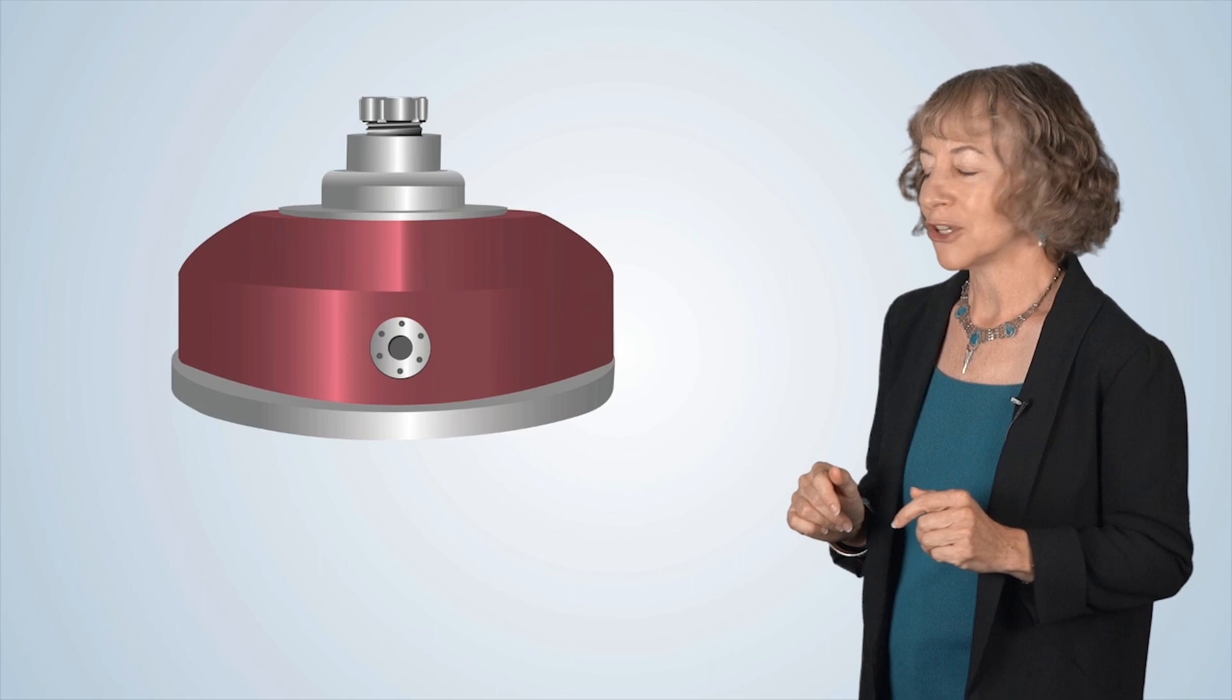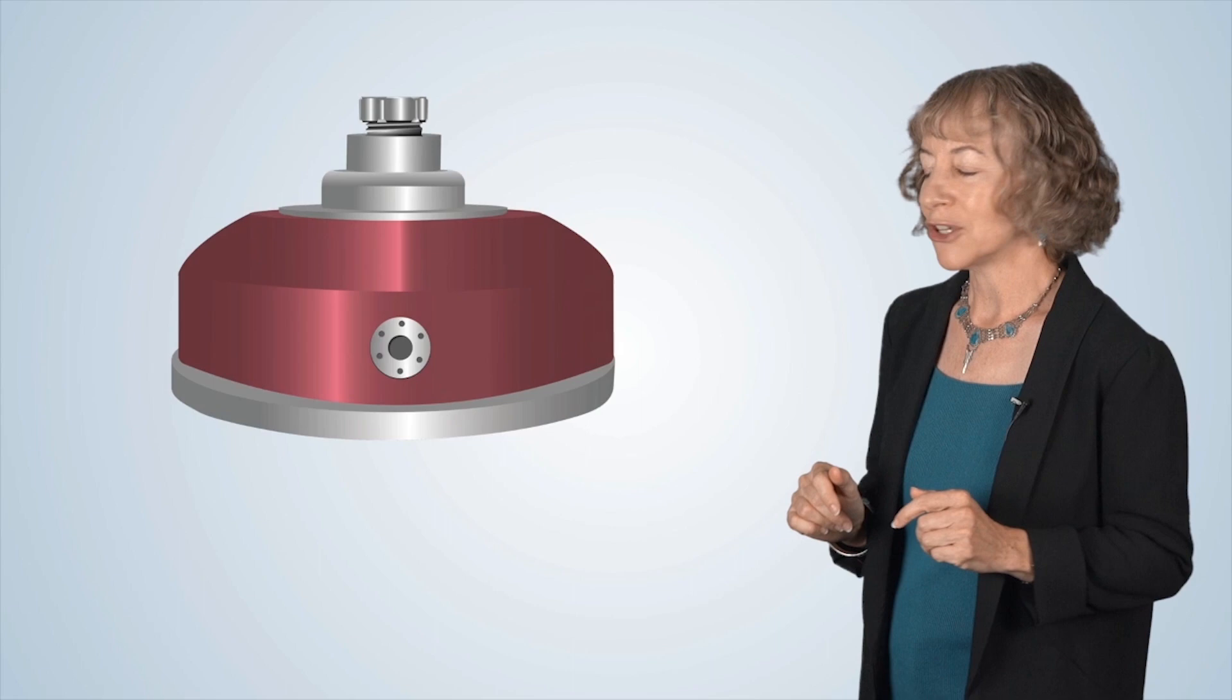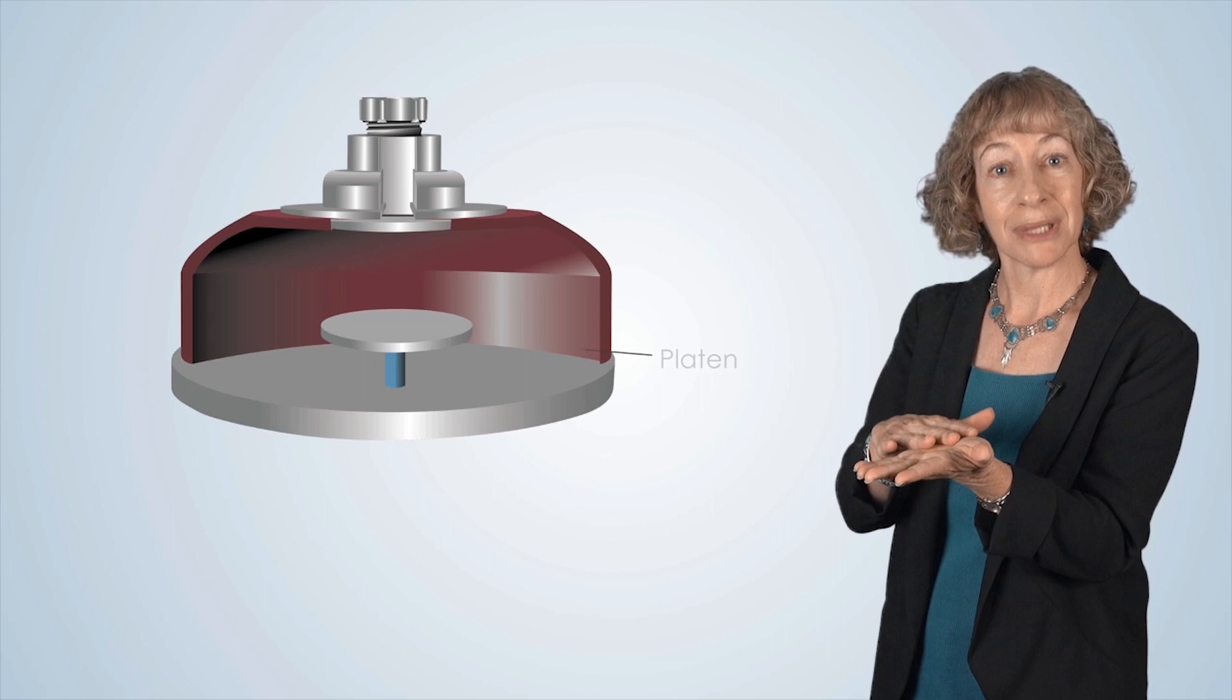This is a schematic of a PECVD chamber. Let's take a look inside. Inside the chamber, there's a flat place for our substrate called a platen, which can be heated. Our substrate is placed on the platen.